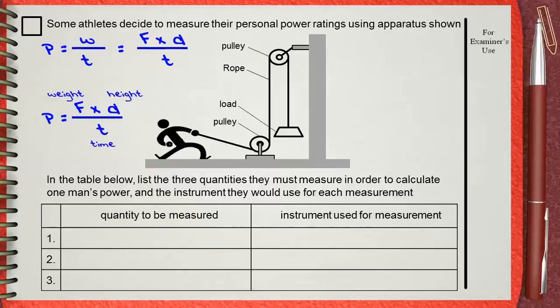So the quantities need to be measured here is the weight of the load, the height, and the time. The instrument used for the weight is the Newton meter. Height uses the measuring tape. Time uses the stopwatch.